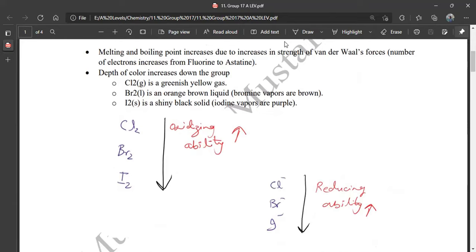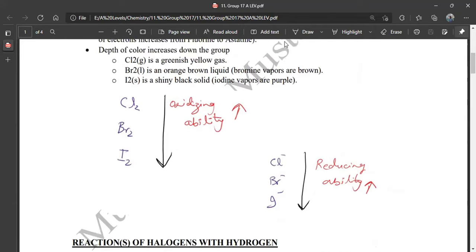Cl2, Br2, I2 - if you go down, oxidizing ability decreases. I negative - so I- can reduce.